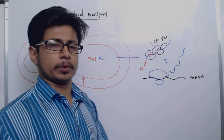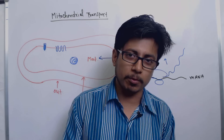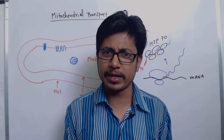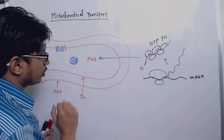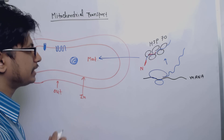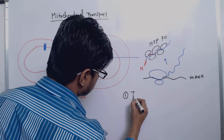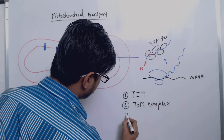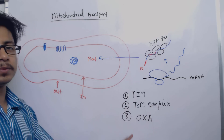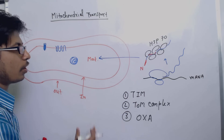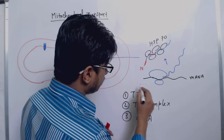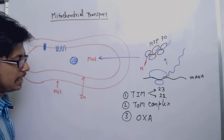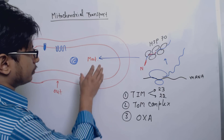For any type of transport, we need a transporter known as a translocon or translocator in the target organelle. In mitochondria, there are three types of translocons: the TIM complex, the TOM complex, and Oxa. There are two types of TIM: TIM 23 and TIM 22. Let's begin with the process of delivering a protein into the mitochondrial matrix.